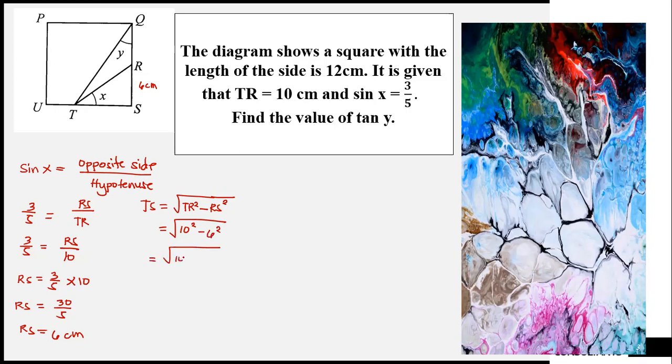10 times 10 is equal to 100. 6 squared is equal to 36. Subtract the two is equal to 64. The square root of 64 is equal to 8. So our line TS is 8 cm.